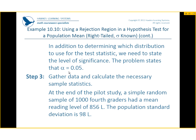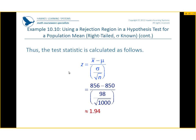In addition to determining which distribution to use, we need to state the level of significance. The problem states that alpha is 0.05. So we gather our data and calculate the necessary sample statistics. At the end of the pilot study, a simple random sample of 1,000 fourth graders had a mean reading level of 856L, and the population standard deviation is 98L.